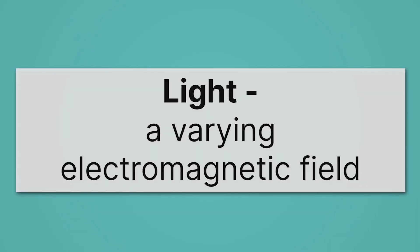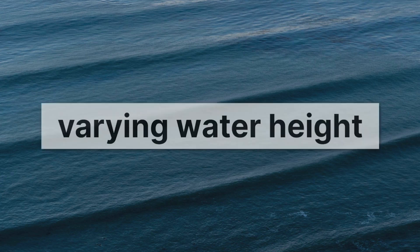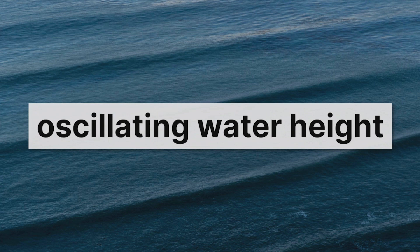Light is a varying electromagnetic field. We now kind of understand the electro and magnetic part. There's both an electric field and a magnetic field in light, but the key is it's varying — and that's what actually makes it a wave. Here we have a water wave, and it's a wave because we have varying water height. Another way to put this varying word, that's a little more science-y, is oscillating. So we have oscillating water height.